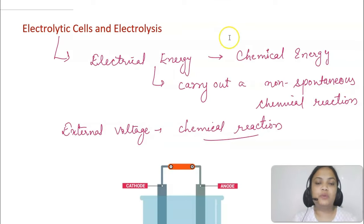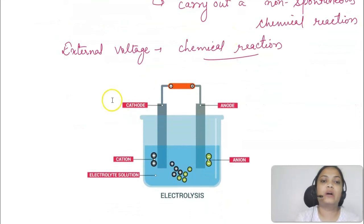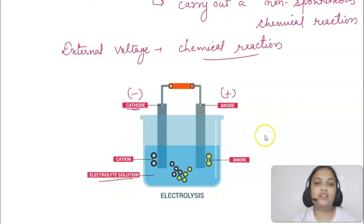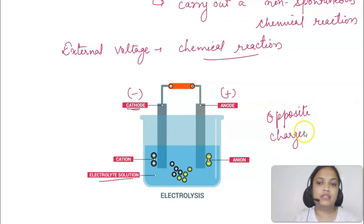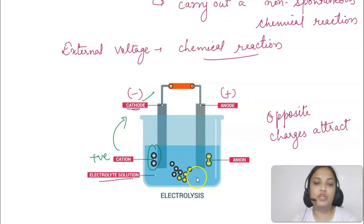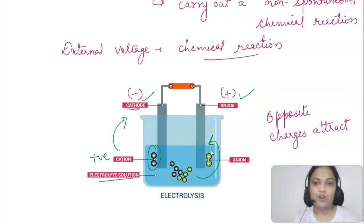Here you can see there are two metal electrodes — one is the cathode and the other is the anode. The one attached to the negative terminal of the battery is the cathode and the positive terminal is the anode. There is an electrolyte solution that dissociates on passing current, giving cations and anions. Opposite charges attract, so cations move towards the cathode and get discharged there. Similarly, anions move towards the anode, which is positively charged, and they get discharged there. This is how electrolysis happens.